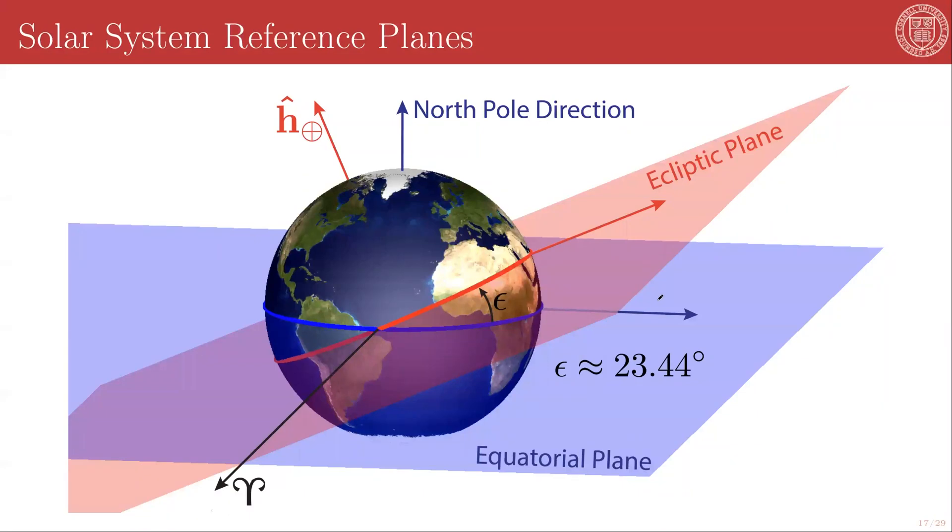When taking measurements in the solar system we typically use two primary sets of reference frames. We use either equatorial reference frames or ecliptic reference frames, and these are most easily understood via their historical definitions, although currently they have slightly different definitions based on very precise definition of an inertial frame based on measurements of extragalactic radio sources.